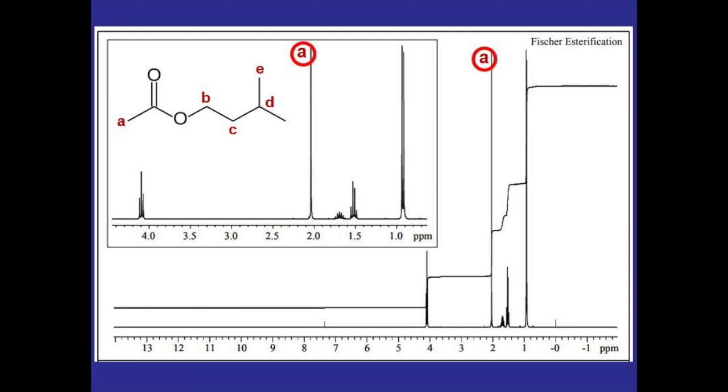Now we can start analyzing the rest of the peaks. For example, this one shows up around four ppm's, being in the range for this kind of proton which usually ends up between three and five ppm's, so that would be for hydrogen B.